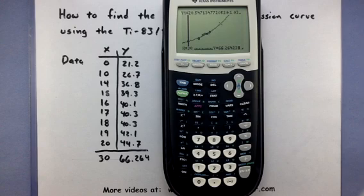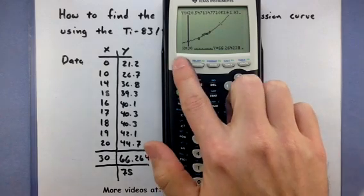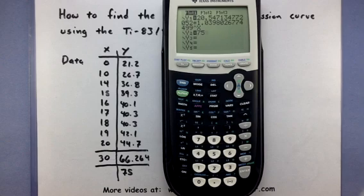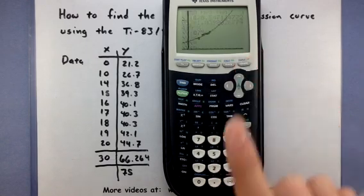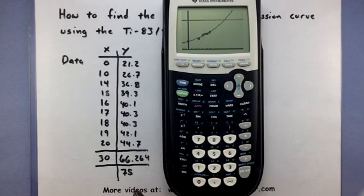Now, another neat thing that we can do is you could use this to predict what a certain X value would be. So suppose we wanted to know when the model eventually reached 75. Well, a neat way you can do this is to go into your Y equals, enter in 75 as a new equation, and then look at it on the graph screen.